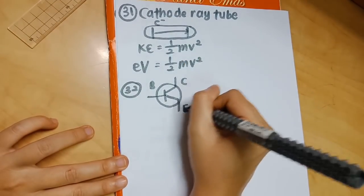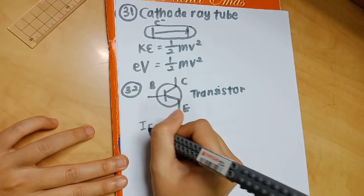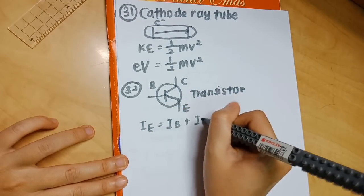Number 32: we have the transistor. There's C, B, and E. The formula for this is that IE equals IB plus IC.